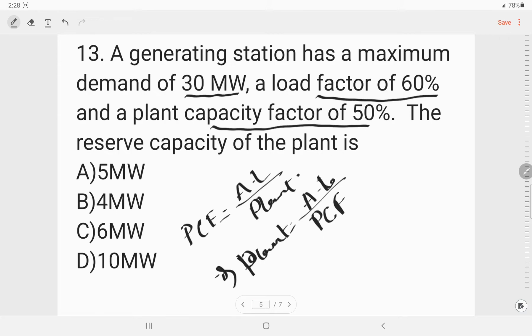Now, how will you find out the average load? Load factor is given. Load factor is average load by maximum demand. So we can substitute this. Average load will be load factor that is 60 percent into maximum demand that is 30 divided by plant capacity which is 50. So we'll cancel this, it will be 36.